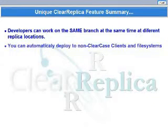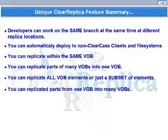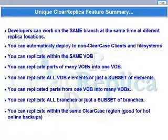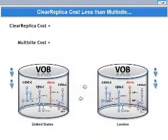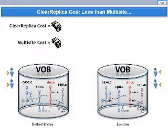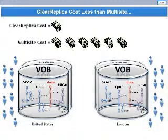Now you see some of the many advantages of ClearReplica over Multisite. ClearReplica's added flexibility allows many more ways to replicate VOB data. ClearCase Multisite is fine when you want to replicate all of the VOB data all of the time and can live within the restrictions of branch mastership. But ClearReplica is best when you have a subset of VOB elements or branches you want to replicate, even to non-ClearCase clients in file systems. The cost of replicating a VOB for two developers in two locations is about the same for both products. But since Multisite is licensed per concurrent user and ClearReplica is licensed per depot or location, as you add users the cost of Multisite rises accordingly, while the cost of ClearReplica stays the same no matter how many users or VOBs you add.